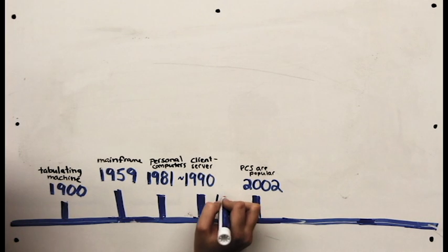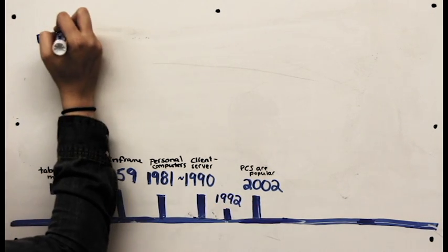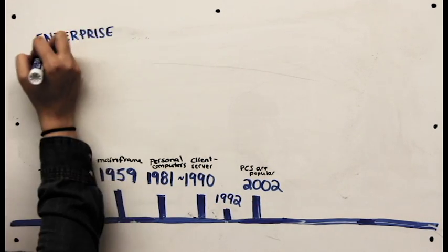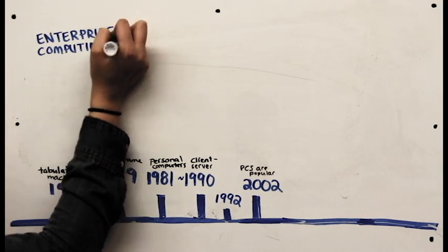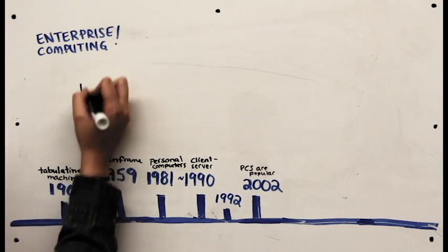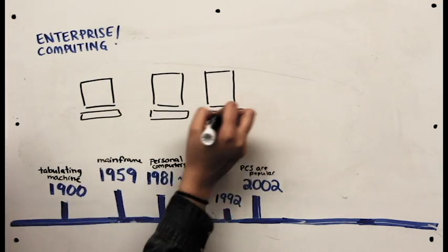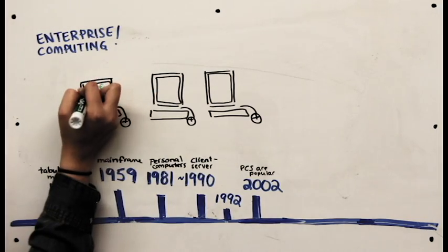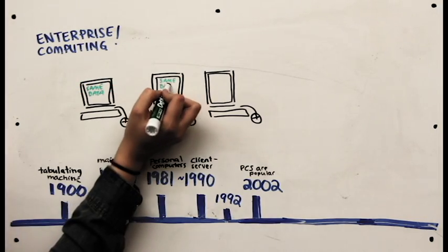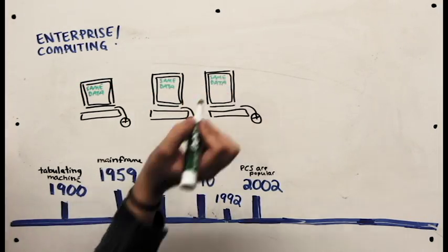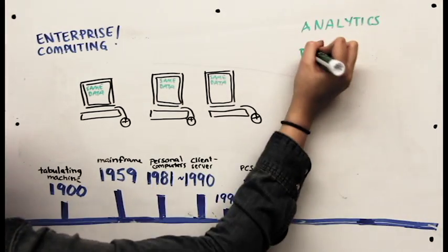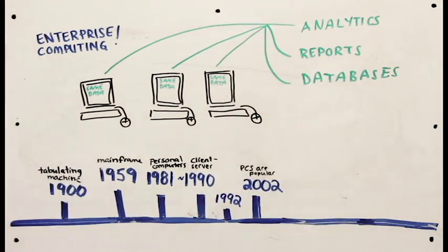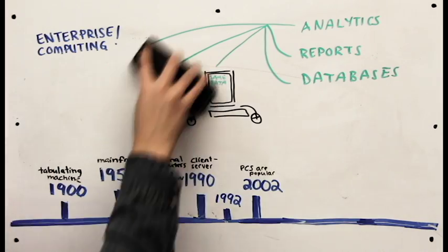Enterprise computing was developed in 1992 and has become critical for businesses' IT infrastructure. It assists with streamlining processes by selling an entire platform to a company that can be accessed by all members of the business. Analytics, reports, and databases are able to be accessed from anyone connected to the system.